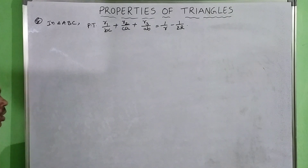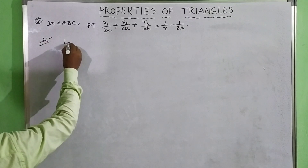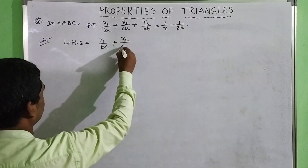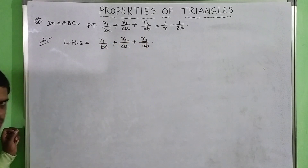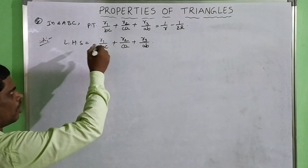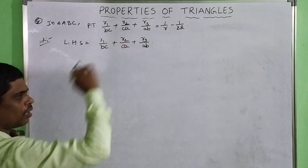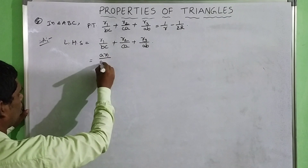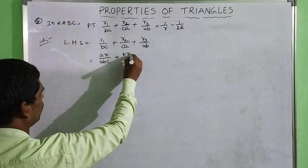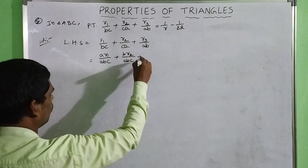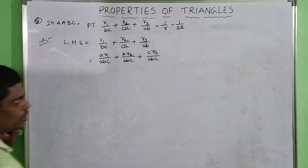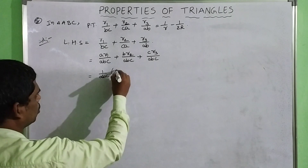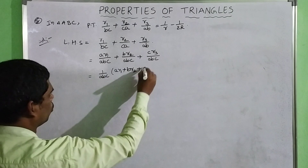First, take the LHS. LHS equals R1/BC plus R2/CA plus R3/AB. Multiply the first term by A/A, the second term by B/B, and the third term by C/C. That gives AR1/ABC plus BR2/ABC plus CR3/ABC. Taking 1/ABC as the common factor, the remaining part is AR1 plus BR2 plus CR3.